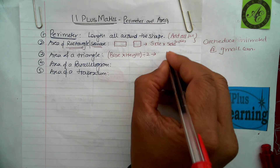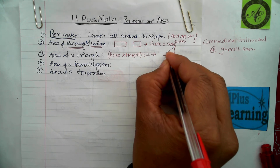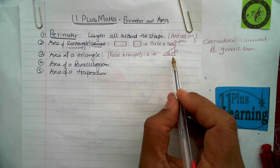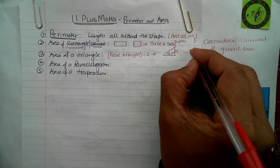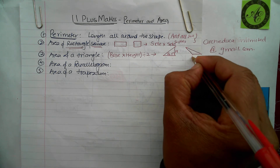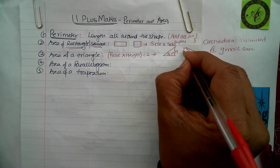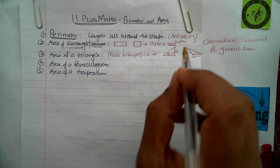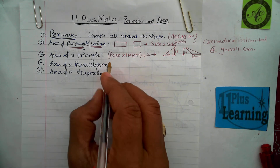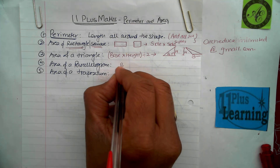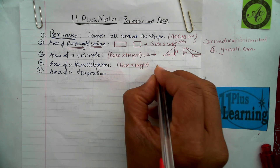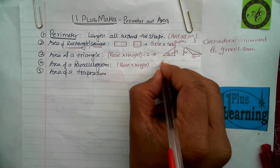We need to know the base and the height. If it's a right-angle triangle it looks like this, and if it is any other type of triangle, that would be the base at the bottom and this is the vertical height. Remember, height is always the vertical height.